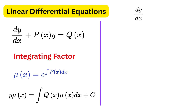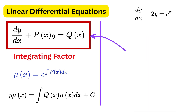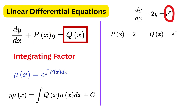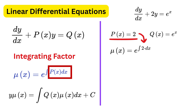Suppose we have dy/dx plus 2y equals e raised to x. First, identify the form: p(x) equals 2 and q(x) equals e raised to x. Using the formula, the integrating factor mu(x) becomes e raised to the integral of 2 dx, which is e raised to 2x.